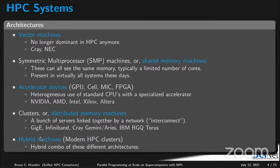From the earliest vector machines to the current modern HPC classes that are hybrid machines. The vector machines were built like maybe in the 60s or 70s and the main idea was to put a lot of arithmetic and logical units on the processor, such that you could send a single instruction to be applied on a long array of one-dimensional contiguous data — that is called the vector. Those machines were the granddaddy of the current machines. The companies that produced them were mostly Cray and NEC.